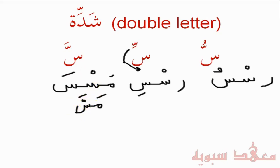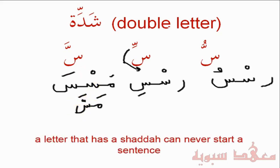A letter that has a Shaddah can never start a sentence, as we said — that's why we put a letter that has a Harakah on it in front. Notice those letters are placed in front, because there is no word that starts with a Seen with a Sukun, or any letter that has a Sukun.